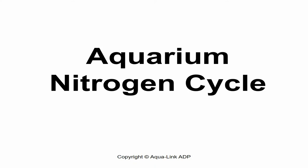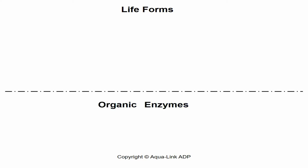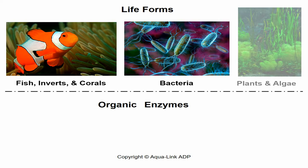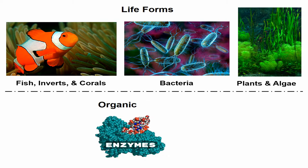The nitrogen cycle is very simple to understand. It revolves around two main elements: life forms and organic enzymes. Among the life forms are livestock, bacteria, and plants. Each creates and releases enzymes through a digestive process. In an aquarium, these enzymes — ammonia, nitrite, nitrate, and carbohydrates — being toxic to their predecessor, become a food source for the life forms next in line.